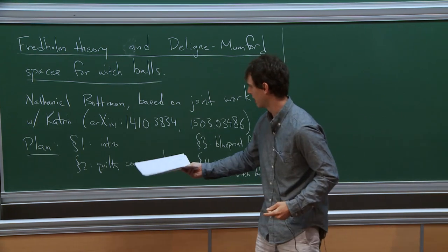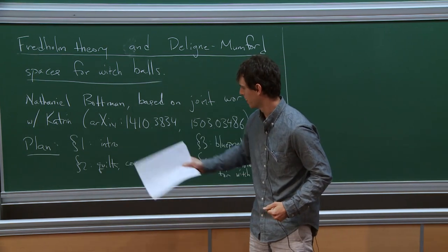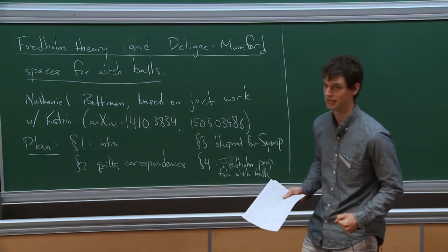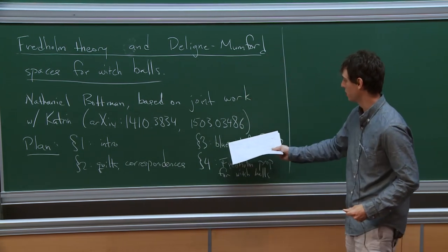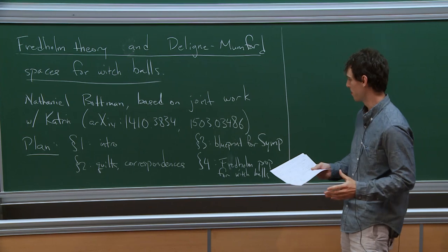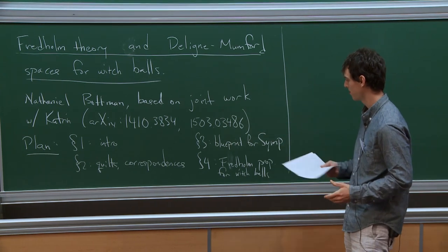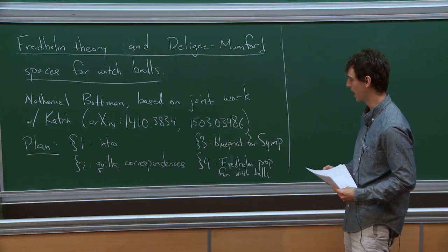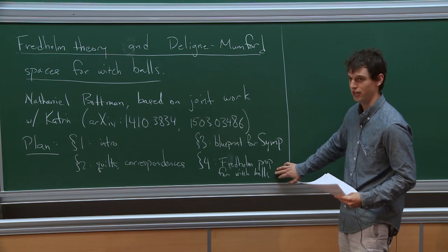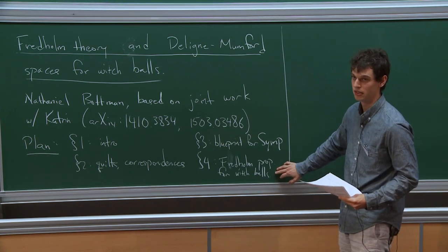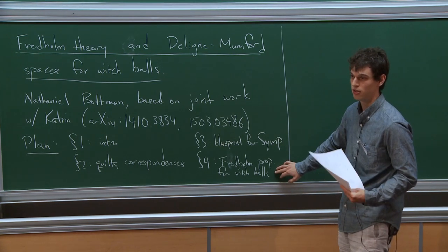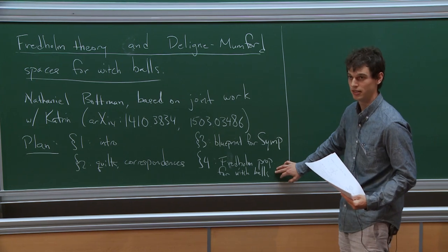Here's the plan. I'm going to give you some motivation and tell you what quilts and correspondences are. I'll tell you the blueprint for the algebra we've come up with for this thing called SIMP, this two-category-like thing. And finally, in the last section, I'll tell you a new result about Fredholmness for quilts with certain kinds of singularities.